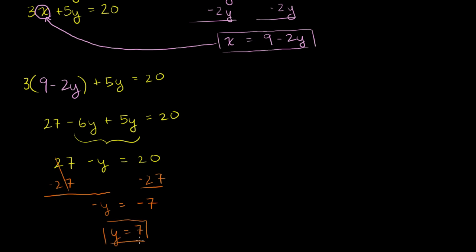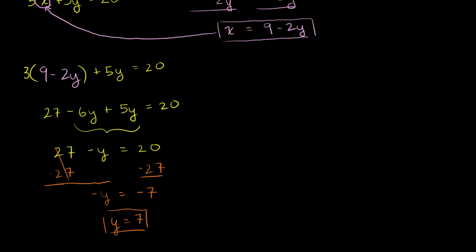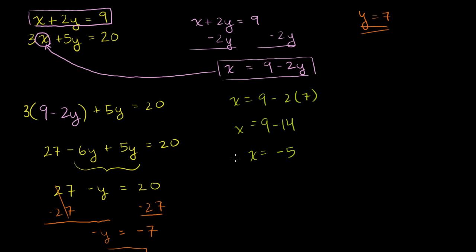So we found the y value of the point of intersection of these two lines — y is equal to 7. Now that we know y, we can solve for x. x is equal to 9 minus 2y, so x equals 9 minus 2 times 7, which is 9 minus 14, which gives us x is equal to negative 5. Using substitution, we've found the pair x = -5, y = 7 that satisfies both equations.